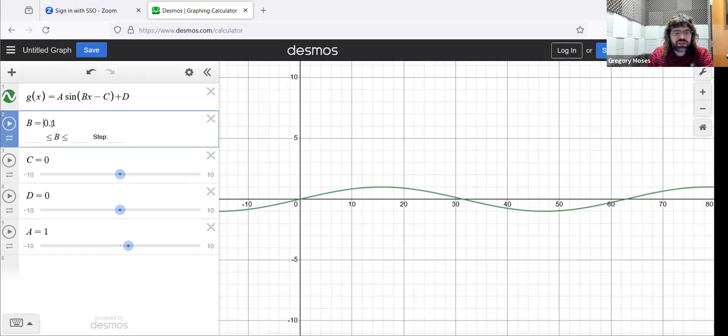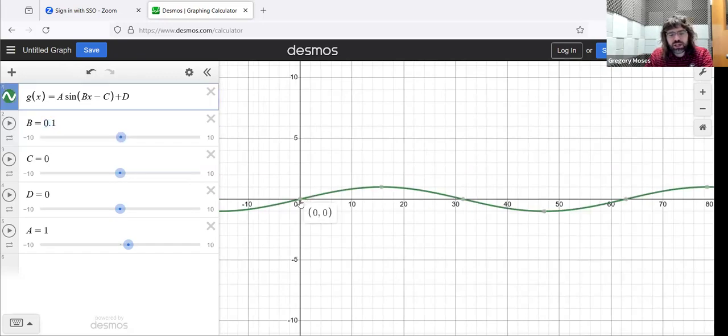When B is close to zero, when B is 0.1, to start to repeat, the function has to go all the way from here way up to here. It's a large period.